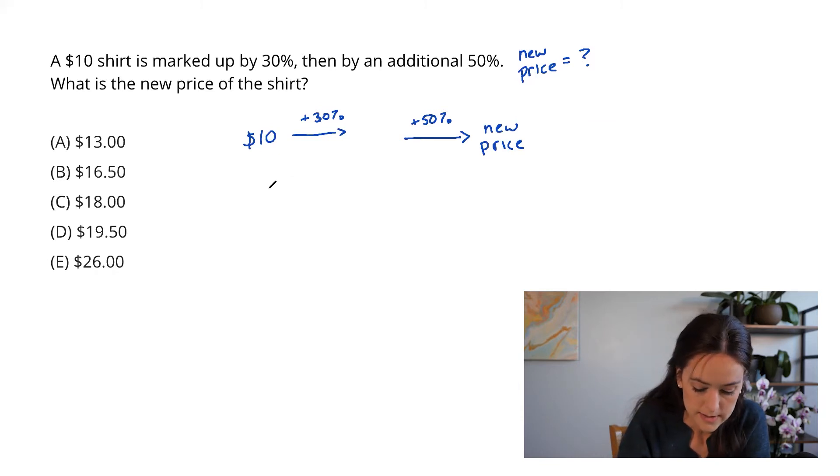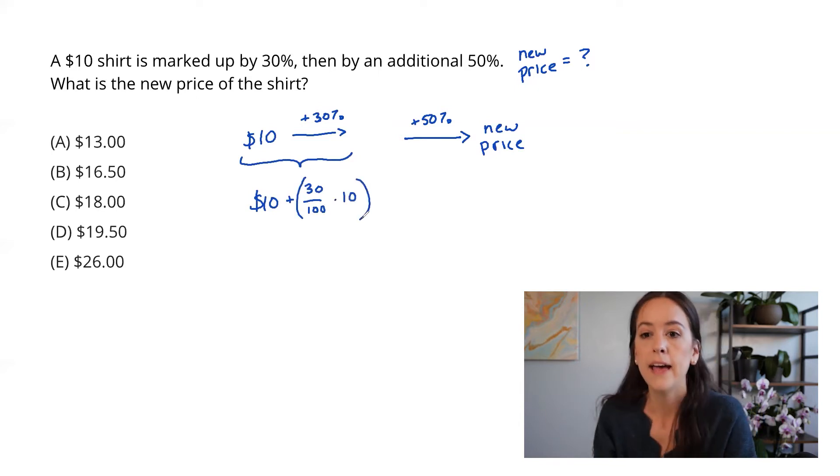So to do this, what I'm going to do is take $10 here and then add 30% of $10 to itself. The reason for that is that a lot of problems won't be clear what you're taking that percent of, and it's always the base. So in this case, it's of $10 again.